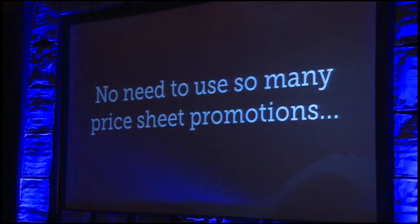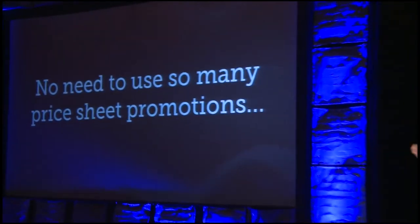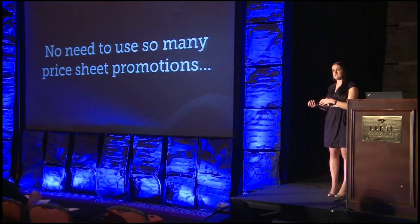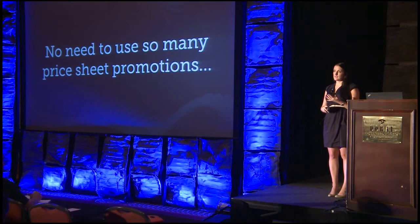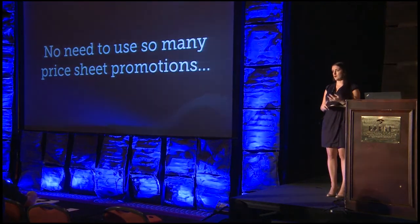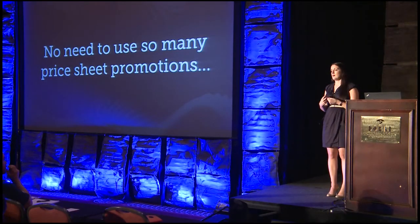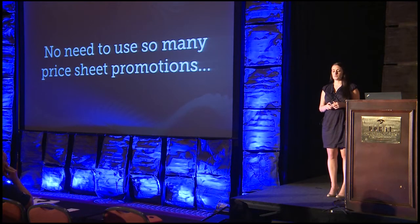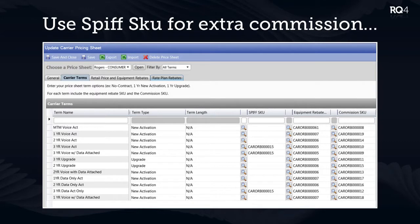The other thing I want to talk about is price sheet promotions. A price sheet promotion is a tool that allows you to track an extra piece of commission. For Sprint, you'd use them for overlays. Depending on the carrier, you'd track specific spiffs on certain phones for a given time frame, volume bonuses, exclusivity bonuses — all the different extra pieces of commission. There's a new column in the phone activation price sheet called 'spiff skew.' I want to explain what it means and how it can be used.